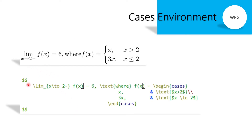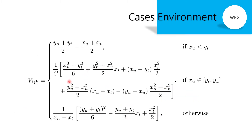Let's see how to write this math mode environment: the limit as x approaches 2 from the left of f(x) equals 6, where f(x) equals x when x is greater than 2, and f(x) equals 3 when x is less than or equal to 2. So f(x) equals begin cases: first case x, ampersand, text command x is greater than 2; line break command; second case 3, ampersand, text command x less than or equal to 2. Let's see how to write this formula in TeXStudio.